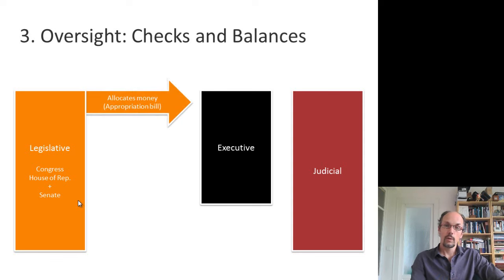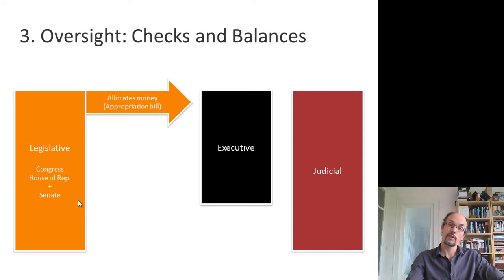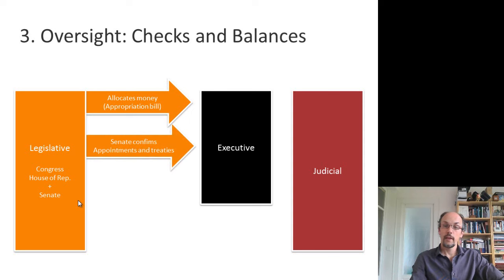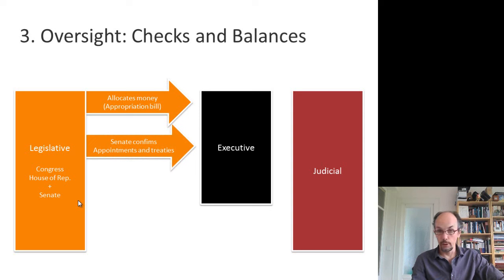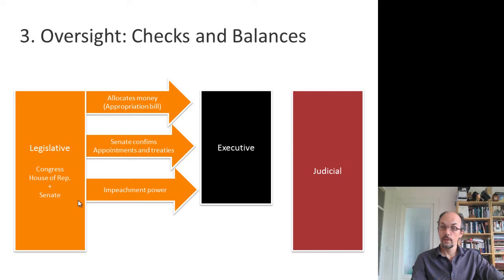How does the legislative branch interact with the other two branches? First, it controls money, and because it controls money it has huge power over the executive branch, which needs money to function. Then the Senate confirms appointments and treaties, so the executive chooses people but they have to be confirmed by the Senate.